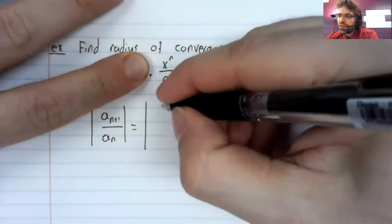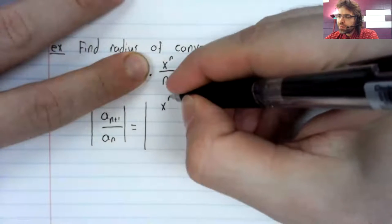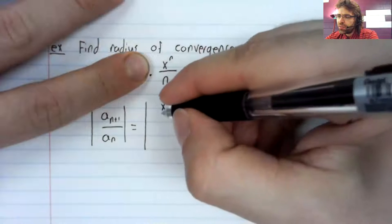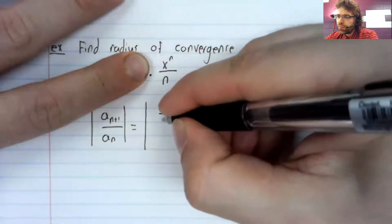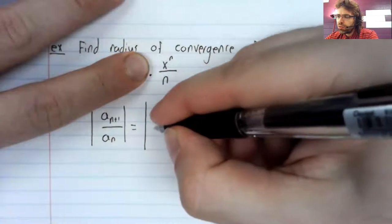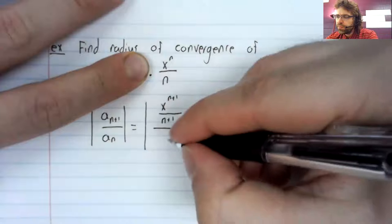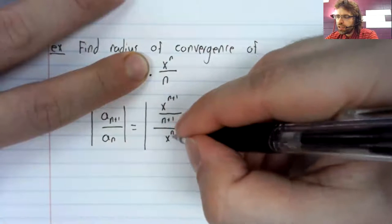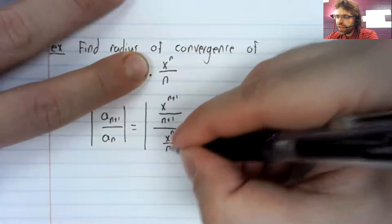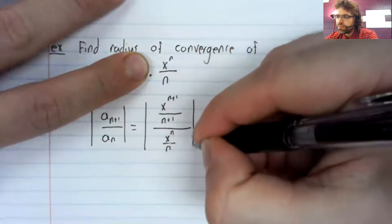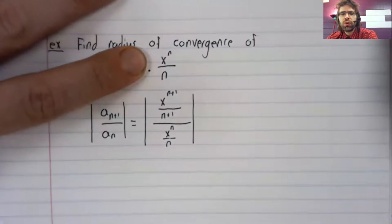All that will be left is x to the n plus one over n plus one divided by x to the n over n.